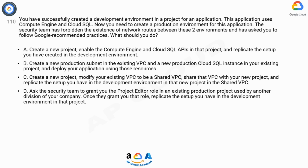C. Create a new project, modify your existing VPC to be a shared VPC, share that VPC with your new project, and replicate the setup you have in the development environment in that new project in the shared VPC. D. Ask the security team to grant you the project editor role in an existing production project used by another division of your company. Once they grant you that role, replicate the setup you have in the development environment in that project.